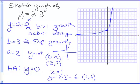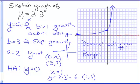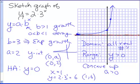The graph continues forever in both directions, so our domain — the valid x values — is all real numbers. The range is the valid y values, and we can see the y values are always above our horizontal asymptote, so our range is y greater than 0. The shape of this curve is called concave up. We knew before sketching that this graph would be concave up by looking at the value of a — when a is greater than 0, we get concave up.